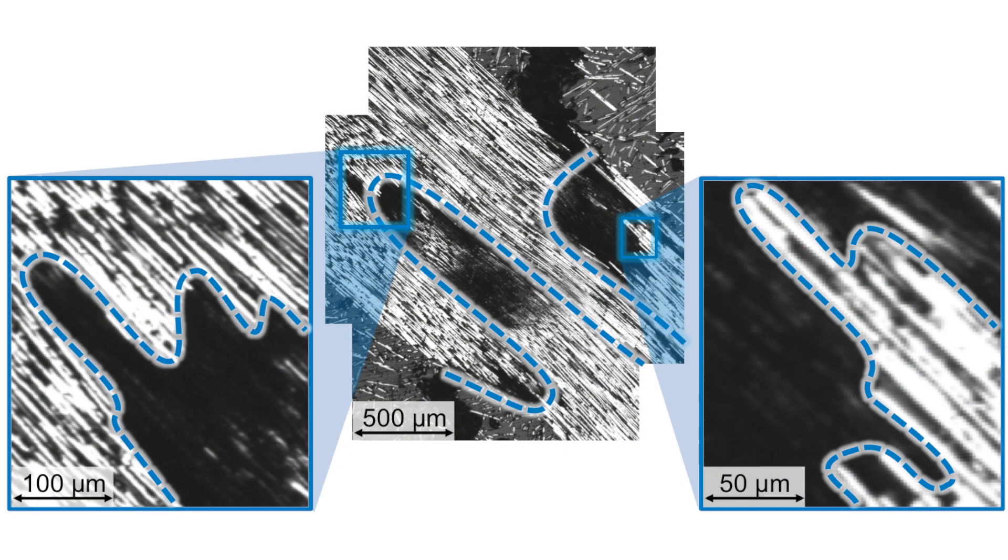Back in 2008, we started being interested in analyzing the failure of fiber bundles in a composite. One thing we noticed was that the failure surface was self-similar across a wide range of scales.